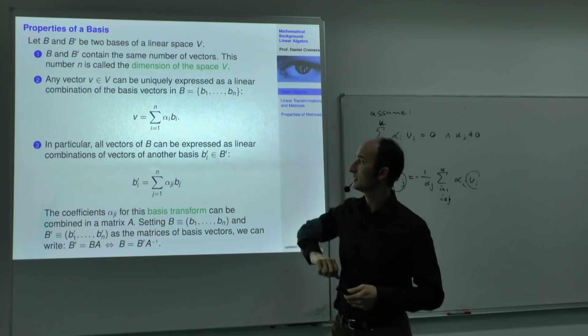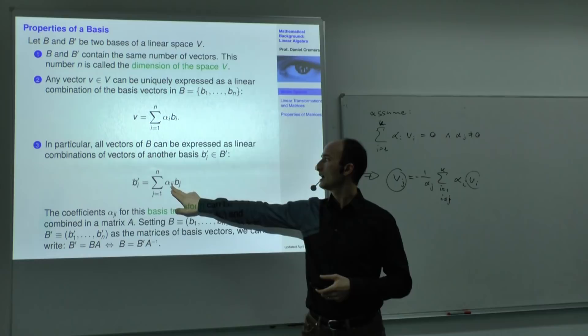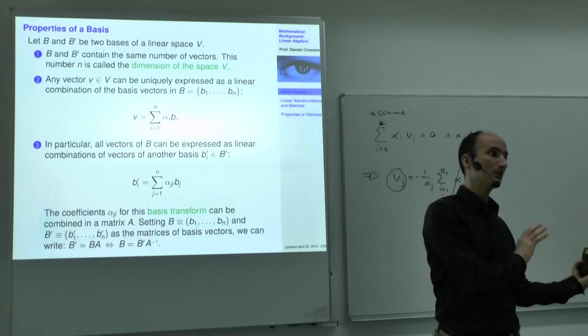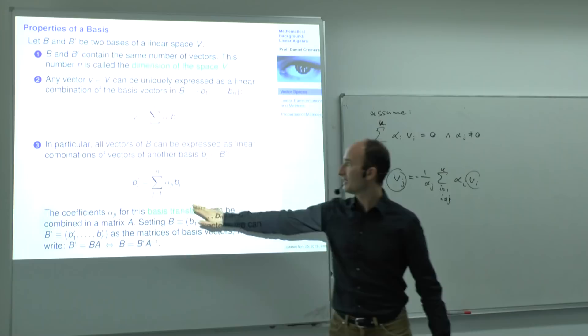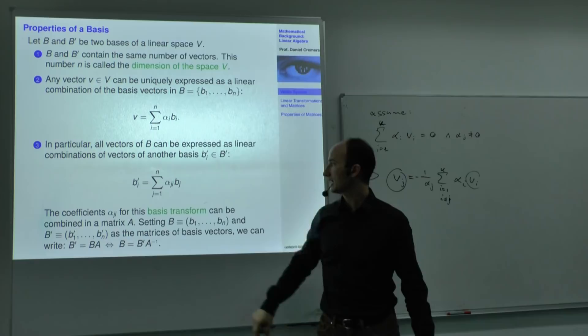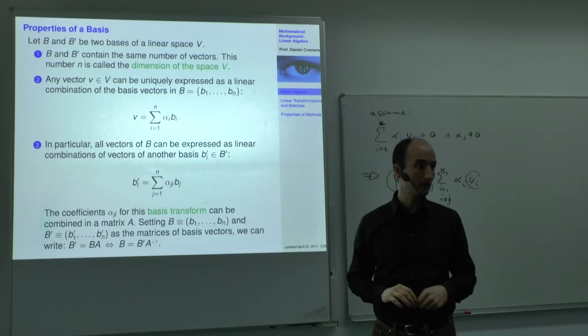Every vector can be uniquely represented. You can represent the vectors of basis B' as linear combinations of the other basis vectors B. The coefficients of these linear combinations form a matrix, and that matrix is called the basis transformation. It allows me to go from one basis to the other.